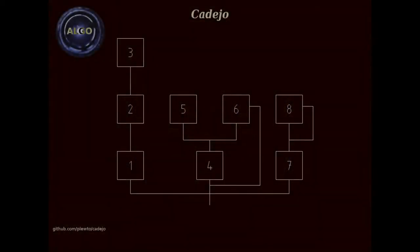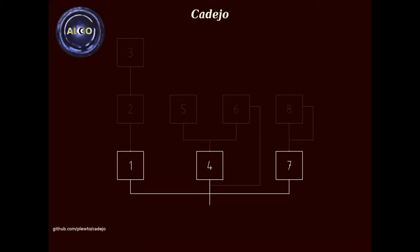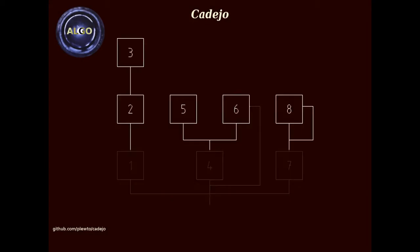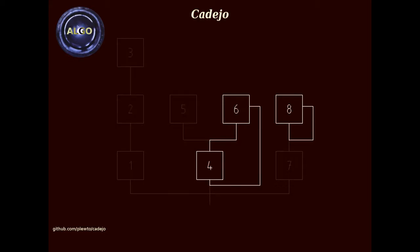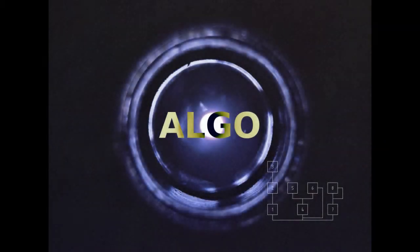Algo is an eight-operator FM synthesizer with three carriers and five modulators. Operators one, four, and seven are carriers, while operators two, three, five, six, and eight are modulators. Two operators, number six and eight, provide FM feedback. In addition to the operators, Algo provides a pitch envelope and three LFOs, one of which is dedicated to vibrato.